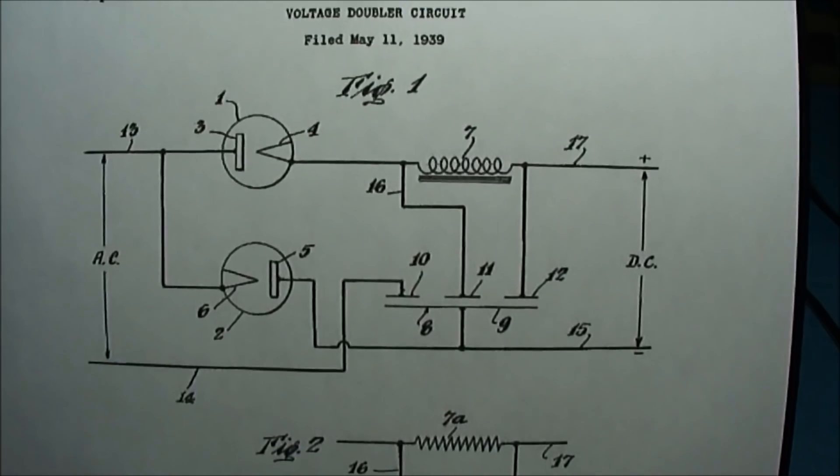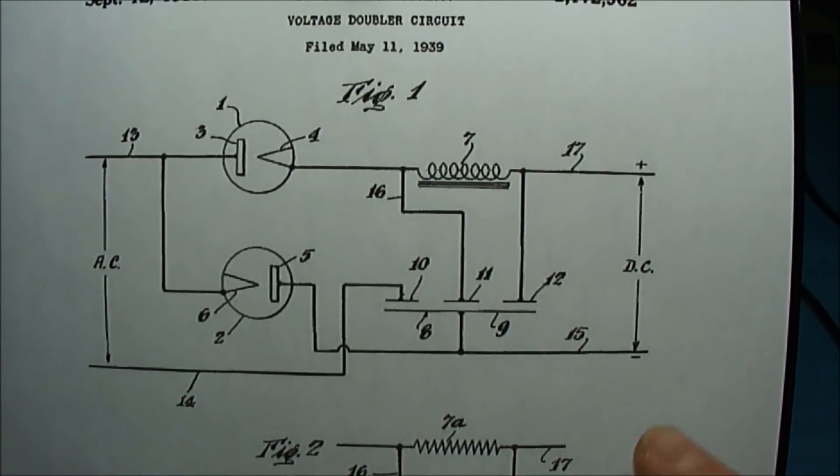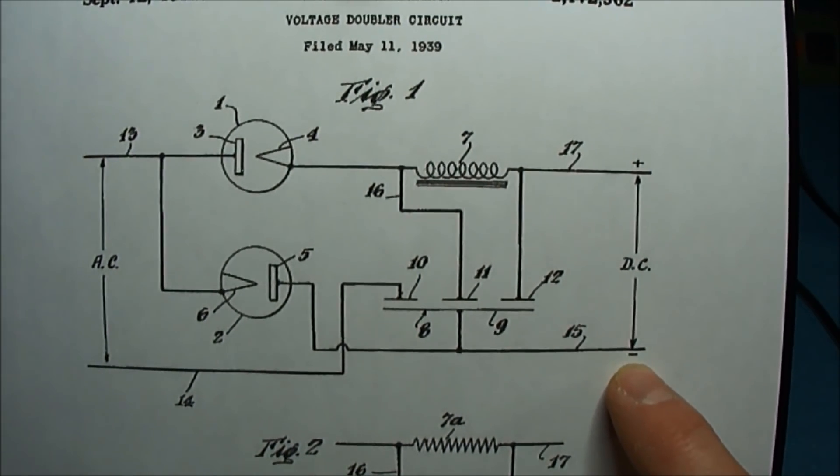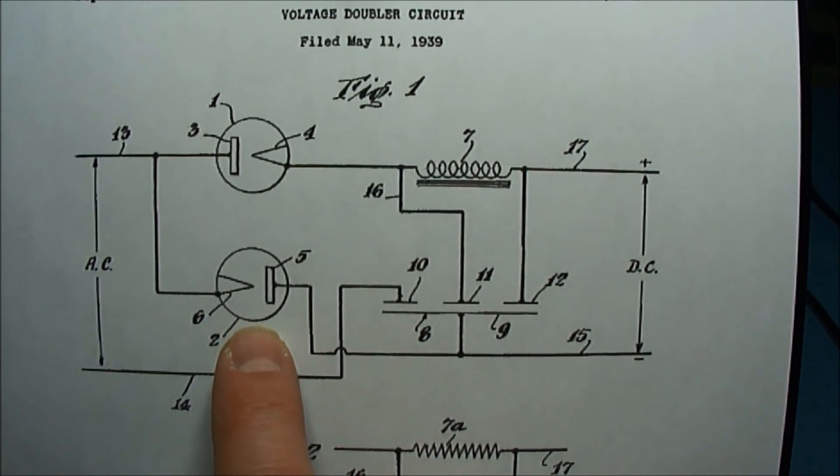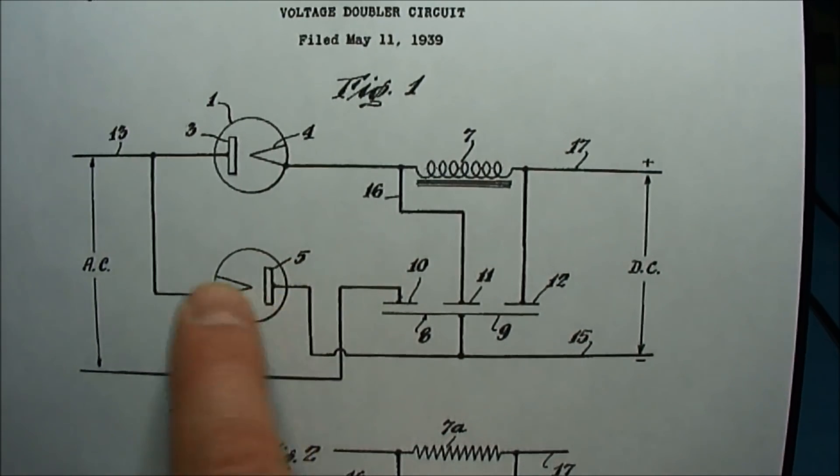This patent's a good example of something I wanted to point out. Here we have the negative polarity. These diodes are drawn totally the opposite of what we draw them today, if you go by the line and the arrow.